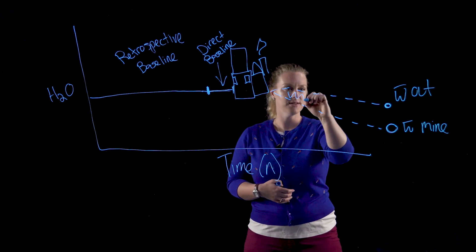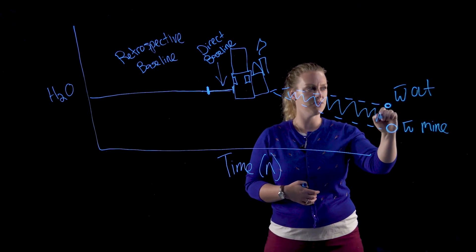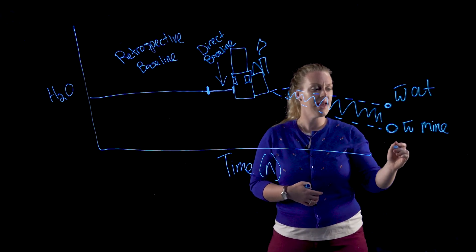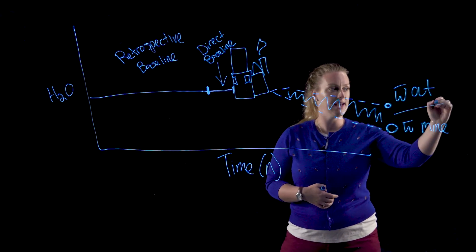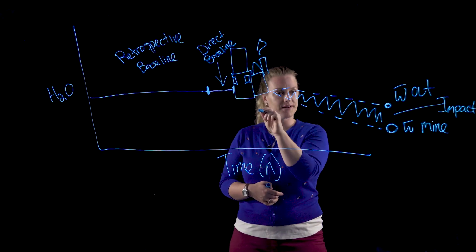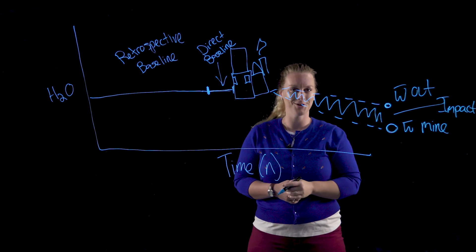So the difference that you see here between the two, between no mine occurring and the mine occurring, is your likely predicted impact from the mine on your valued ecosystem component, which is in fact your water.